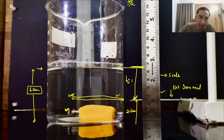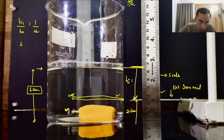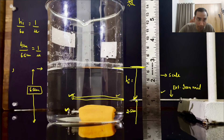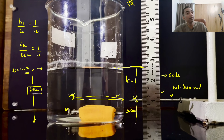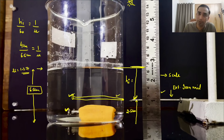Now applying the formula: h-i upon h-o equals 1 upon mu. With h-i equal to 4 centimeters and h-o equal to 5.5 centimeters, solving gives mu approximately 1.37. Since this is tap water rather than pure water, you can't expect the refractive index to be exactly 1.33.